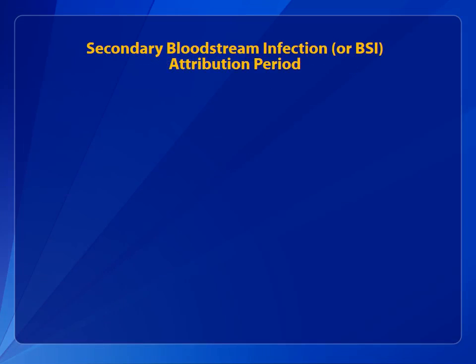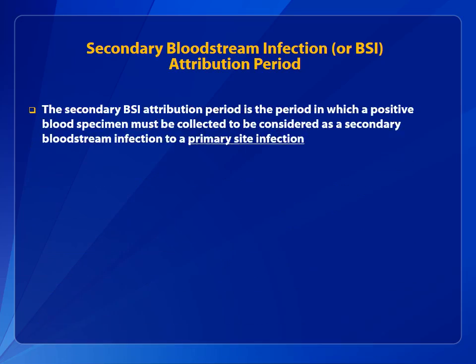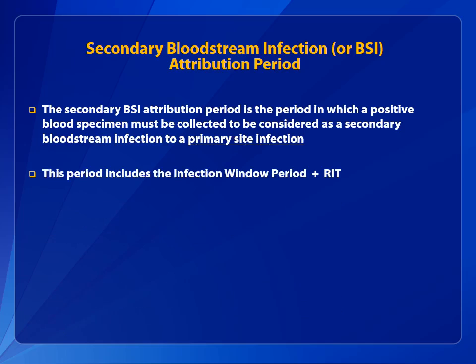The secondary BSI attribution period is the period in which a positive blood specimen must be collected to be considered as a secondary bloodstream infection to a primary site infection. This period includes the infection window period plus the RIT. It is 14 to 17 days in length, depending upon the date of event.